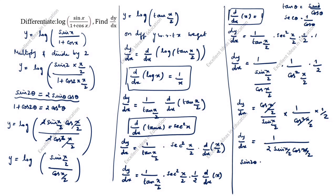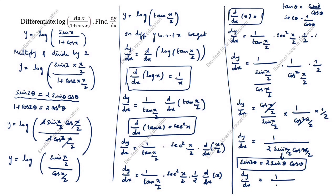Now, 2 sin(x by 2) cos(x by 2) is the formula for sin x. So dy by dx is equal to 1 by sin x. These two cancel, and what is 1 by sin x? It is cosecant x. So dy by dx is equal to cosecant x. This is the answer. Thanks for watching this video.